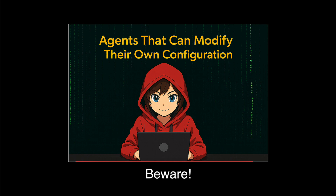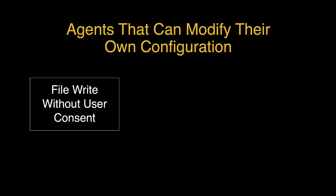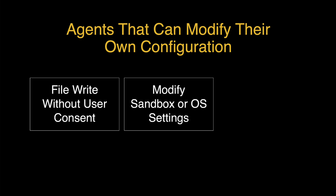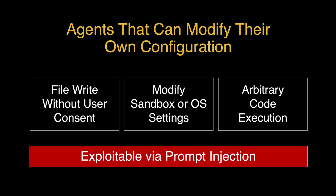There's a common vulnerability pattern we've described in the past: agents can sometimes modify their own configuration without a human being in the loop. This means they can allow certain commands that let them run arbitrary operating system commands, or they can add MCP servers and achieve remote code execution that way. This is also possible with indirect prompt injection, which makes it very dangerous. The pattern is usually when an agent can write to files without the user's consent, and if one of those files is a configuration file for the sandbox, operating system, or the agent's own configuration, then we can get arbitrary code execution. This is exploitable with prompt injection — we get an out-of-the-box sandbox escape.